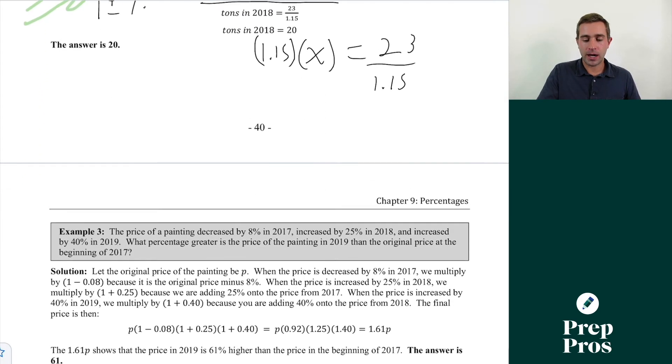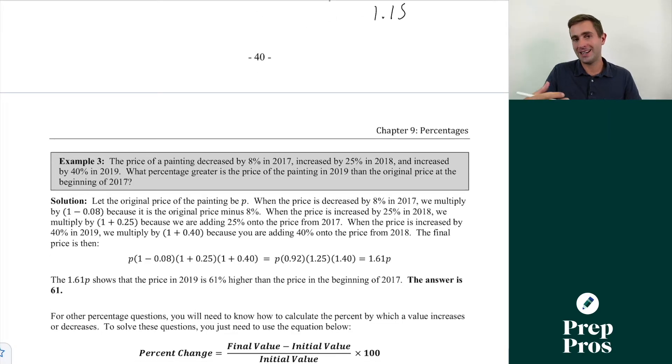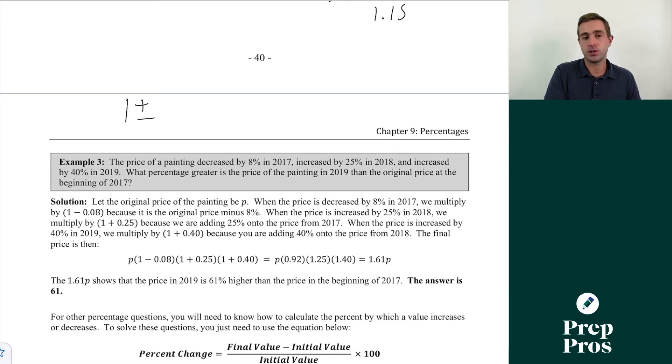The third really common variety we see is when we have multiple percent increases or decreases in a row. The same thing we always have to understand for all of these is simply our one plus or minus. Here, the price of a painting decreased by 8% in 2017. That can be expressed because we always do 1 plus or minus the percent expressed as a decimal. 8% is the same as 0.08. So to start with, we can do 1 minus 0.08. It increased by 25% in 2018, so that part we can express as 1 plus 0.25. And it increased by 40% in 2019, that can be expressed as 1 plus 0.40.